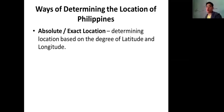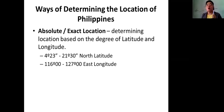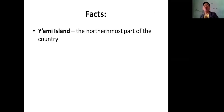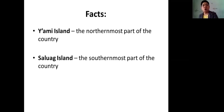Another is what we call absolute location — determining location based on the degree of latitude and longitude. The exact location of the Philippines is 4 degrees 23 minutes to 21 degrees 30 minutes north latitude, and 116 degrees to 127 degrees east longitude. Yami Island is the northernmost part of the Philippines, also known as Mavulis Island, part of the province of Batanes, only 29 kilometers away from Taiwan. Salwag Island is the southernmost part of the Philippines, about 43 kilometers from northward Borneo.